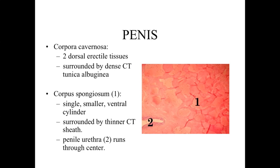Within the penis, we have two distinct regions. The corpora cavernosa are two dorsal cylinders of erectile tissue containing large vascular sinuses. The corpora cavernosa are surrounded by a dense connective tissue called the tunica albuginea, which forms a distinct rigid boundary around them.